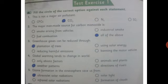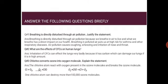MCQ 4: global warming tends to change — only abiotic factors, animals and plants, weather patterns, or direction of rivers. The right answer is weather patterns. MCQ 5: ozone formation in the atmosphere saves us from — ultraviolet solar radiations, solar light, infrared solar radiations, or formation of clouds. The answer is ultraviolet solar radiation.